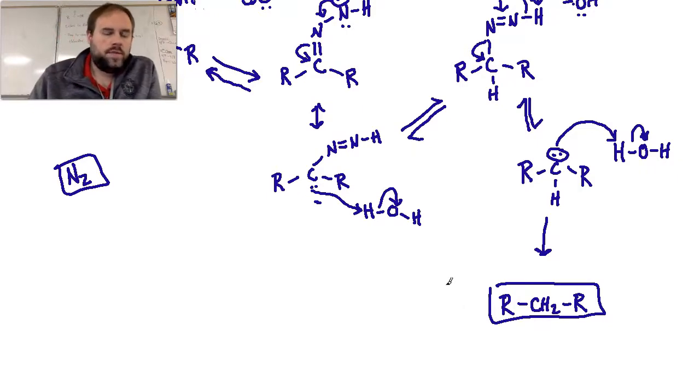Wolff-Kishner is very useful in terms of undergoing a reduction process where you want to completely eliminate the oxygen or the carbonyl group, whereas a lot of the other reductions that we've seen for aldehydes and ketones will turn that group into an alcohol. So you could almost view this as a stronger or a more powerful reduction in comparison to those with the alcohols.